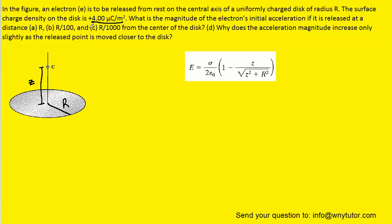We notice that the surface charge density on the disk is positive, and therefore at this point the electric field produced by the charged disk will point away from the disk. So we can draw an electric field vector pointing away from the charged disk and label it with capital E.